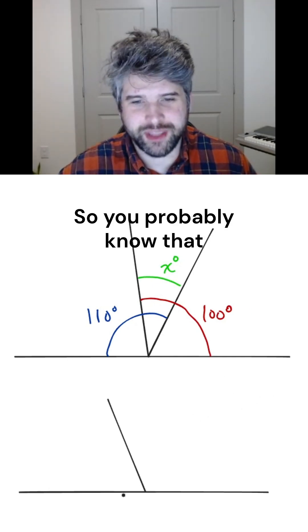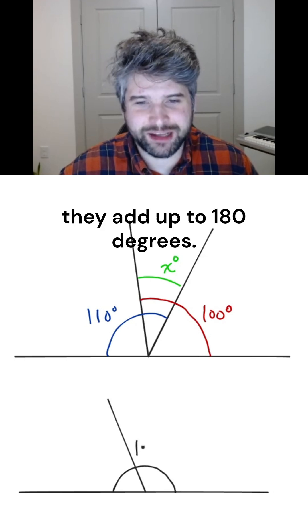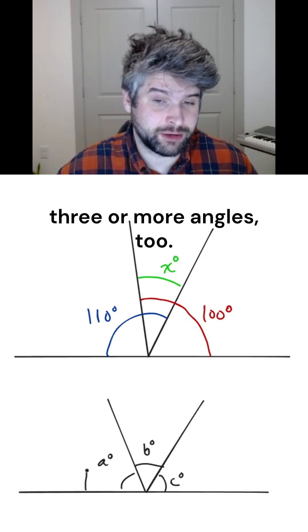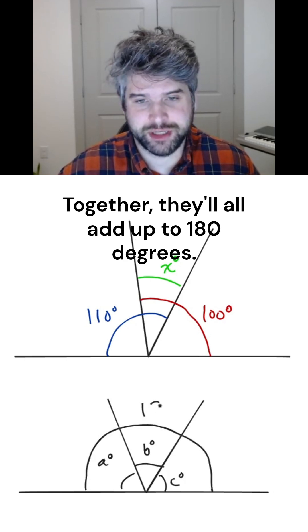So you probably know that when two adjacent angles make a straight angle, they add up to 180 degrees. And yes, this applies to three or more angles too. Together, they'll all add up to 180 degrees.